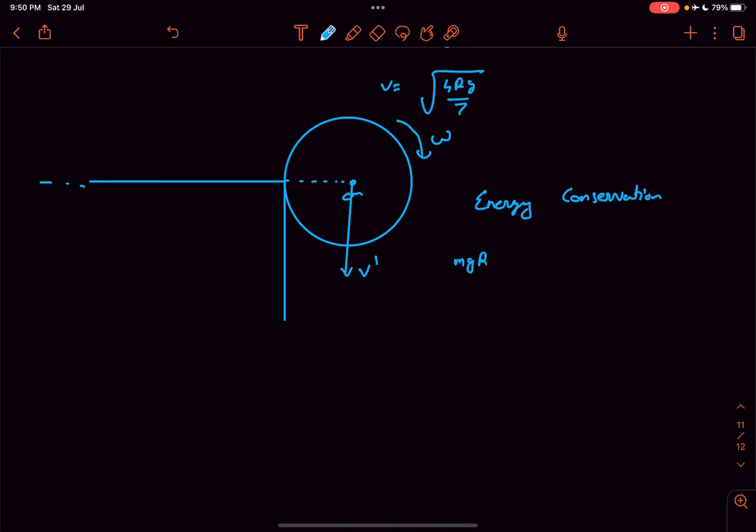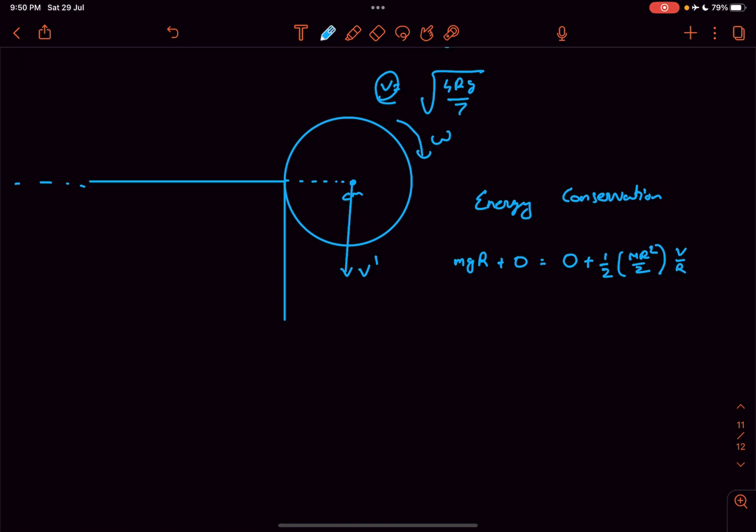Initially the potential energy was mgr. Kinetic energy was zero. Now the center of mass is in line with this datum level. So we can say the potential energy is zero and the kinetic energy would be half i omega squared. i about the center is mr squared by 2 and the omega is simply this v divided by r. So I'm gonna write it as v by r whole squared plus the kinetic energy of the center of mass which would be half m v dash squared.